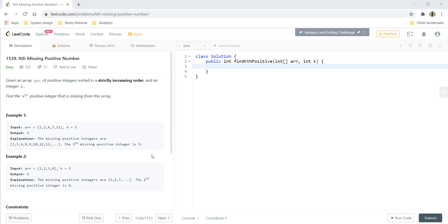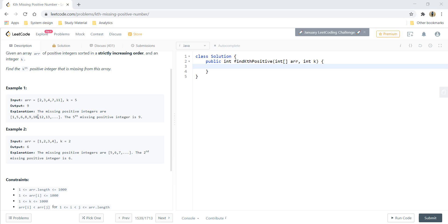Hi guys, welcome to Algorithms Made Easy. Today we will solve the question 'Kth Missing Positive Number.' Given an array of positive integers sorted in strictly increasing order and an integer k, we need to find the kth positive integer that is missing from the array.